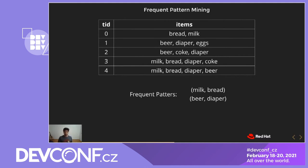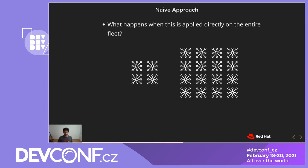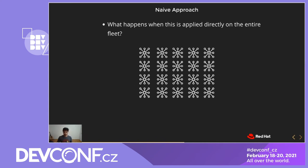Specifically, the two main methods that we explored were a priori and FP growth. Now that we have our method and our data set, can we just go ahead and apply it to our fleet? Let's pause and think about what might happen. Say in your organization you have 20 clusters — four of them are from customer X, who's running one kind of workload, and the most frequent symptoms there are A, B, and C. And 16 of the clusters are from customer Y, who's running a different kind of workload, where the most frequently seen symptoms are D and E.